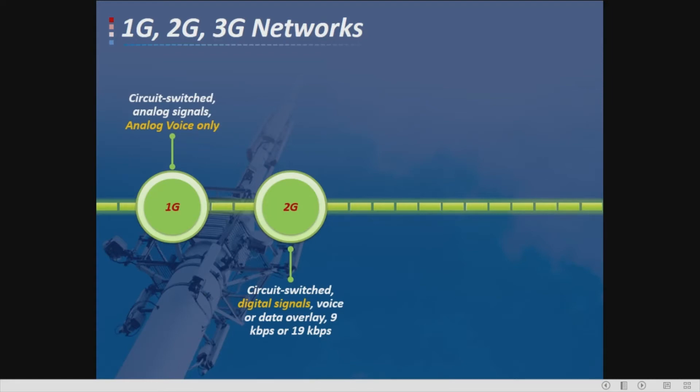The 2G mobile system is digital and uses either TDMA or CDMA for multiplexing. Digital cellular systems use digital modulation and have several advantages over analog systems compared to the first generation, including better utilization of bandwidth, more privacy, and incorporation of error detection and correction.